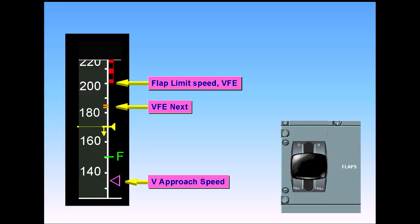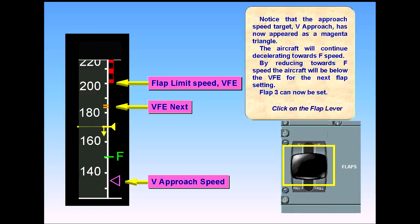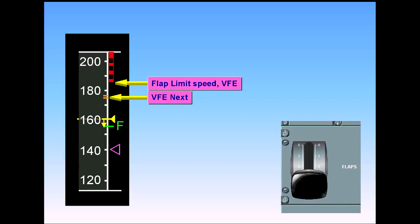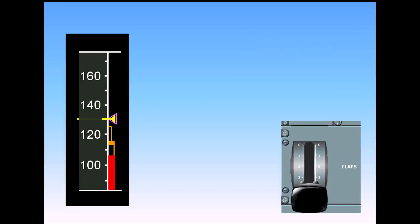Click on the flap lever. As before, VFE next and VFE move to reflect the new flap position. Flaps full can now be selected. Click on the flap lever. The aircraft will eventually stabilize at V-approach, and the VFE will be adjusted to reflect full flaps.